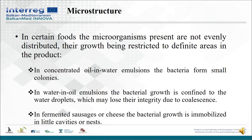Let's now consider the microstructures. In certain foods, the microorganisms present are not evenly distributed; they grow being restricted to definite areas in the product. For example, in concentrated oil-in-water emulsions, bacteria form small colonies. In water-in-oil emulsions, bacterial growth is confined to the water droplets, which may lose their integrity due to coalescence. In fermented sausages or cheese, bacterial growth is immobilized in little cavities or nests.